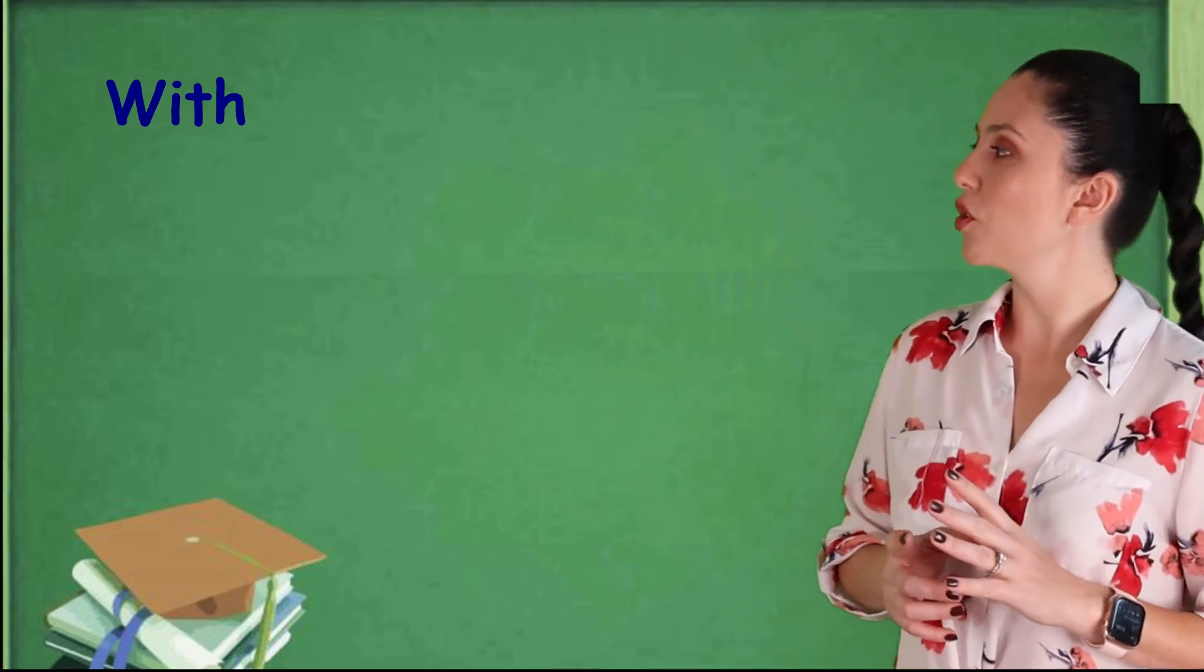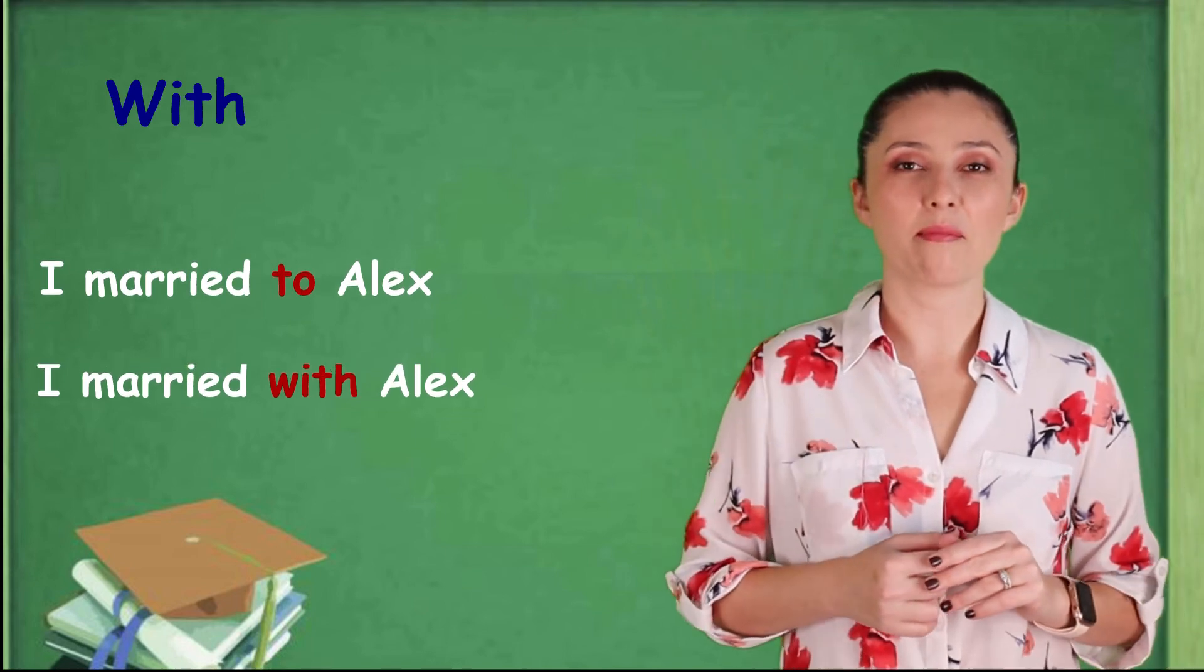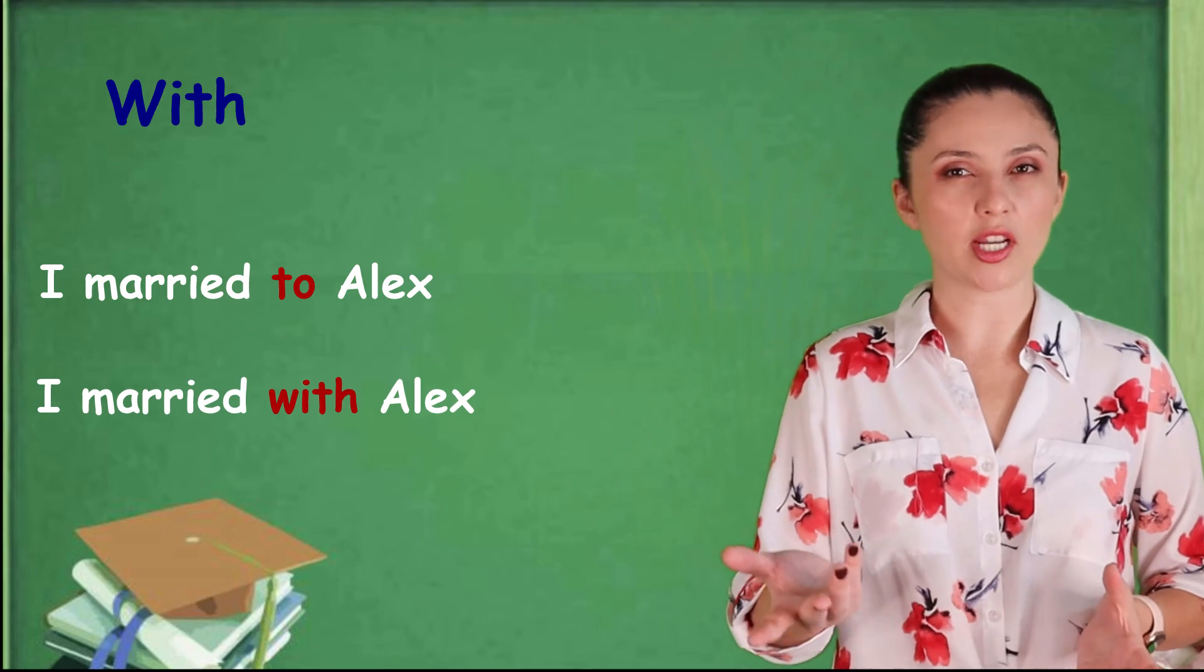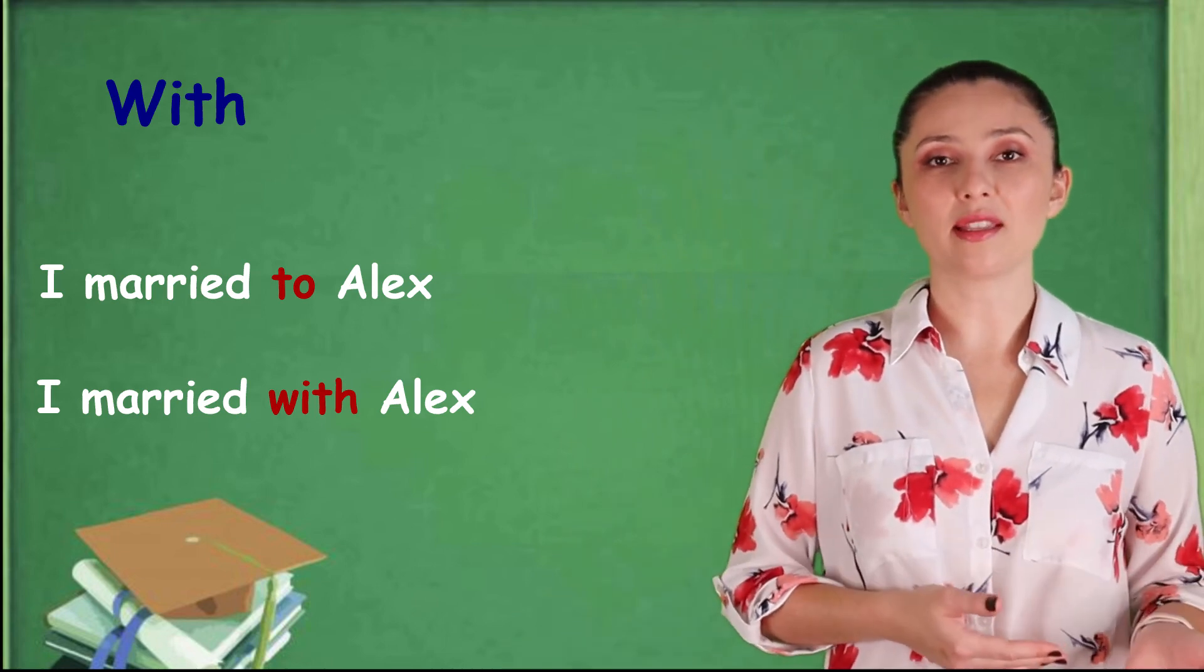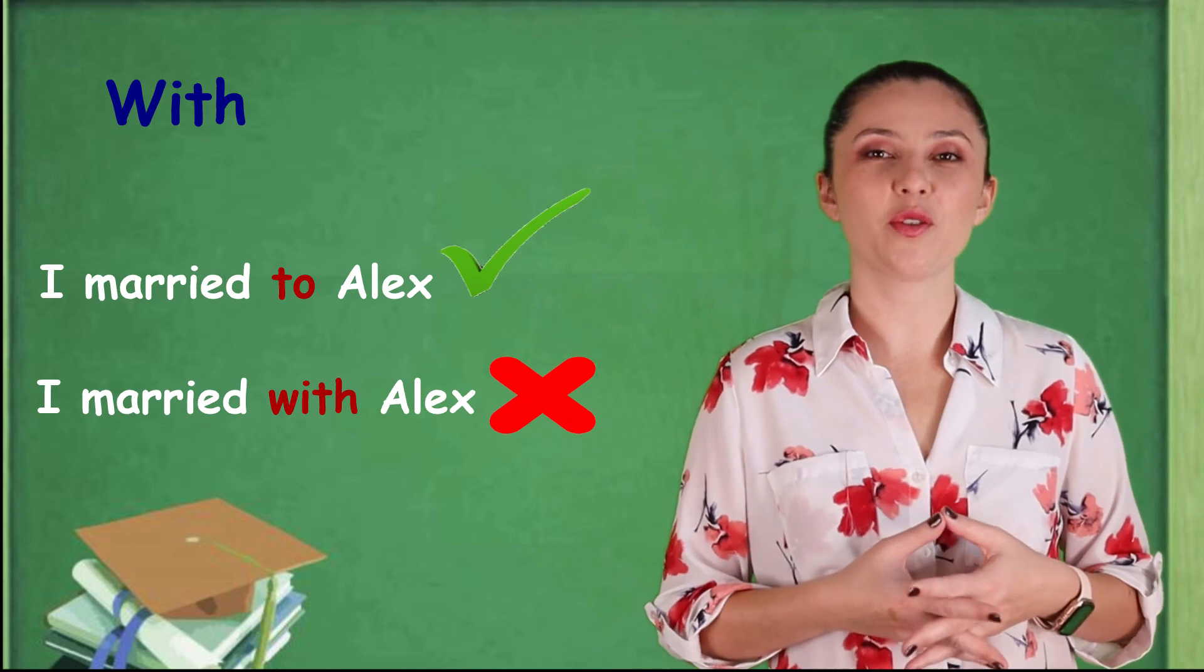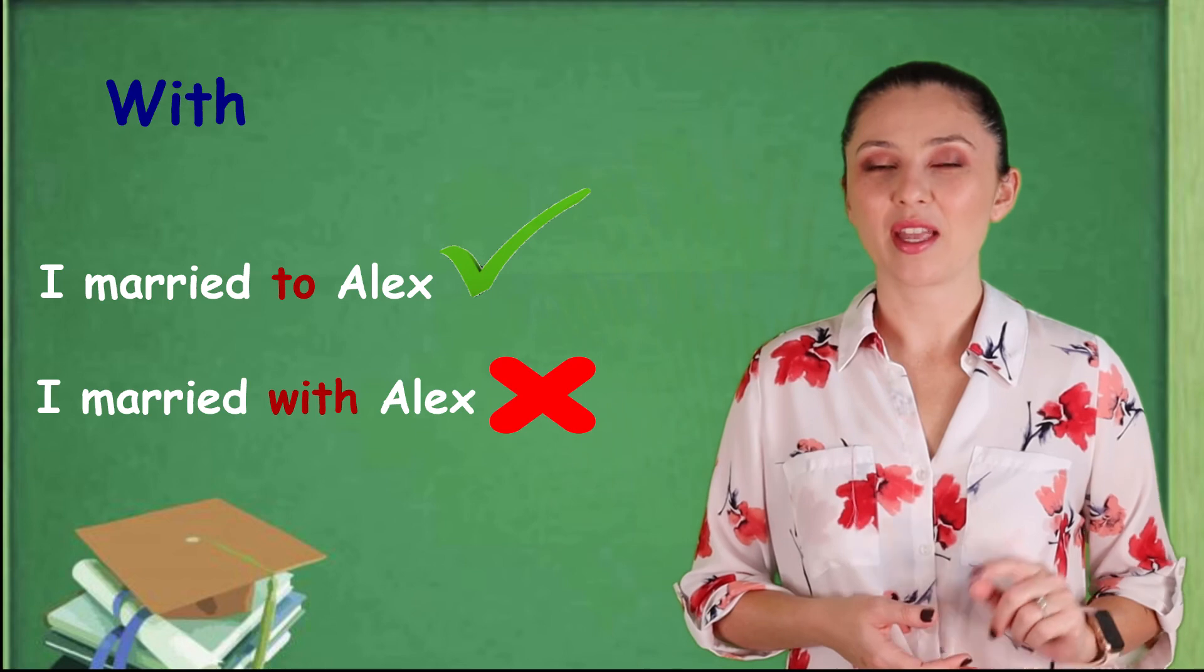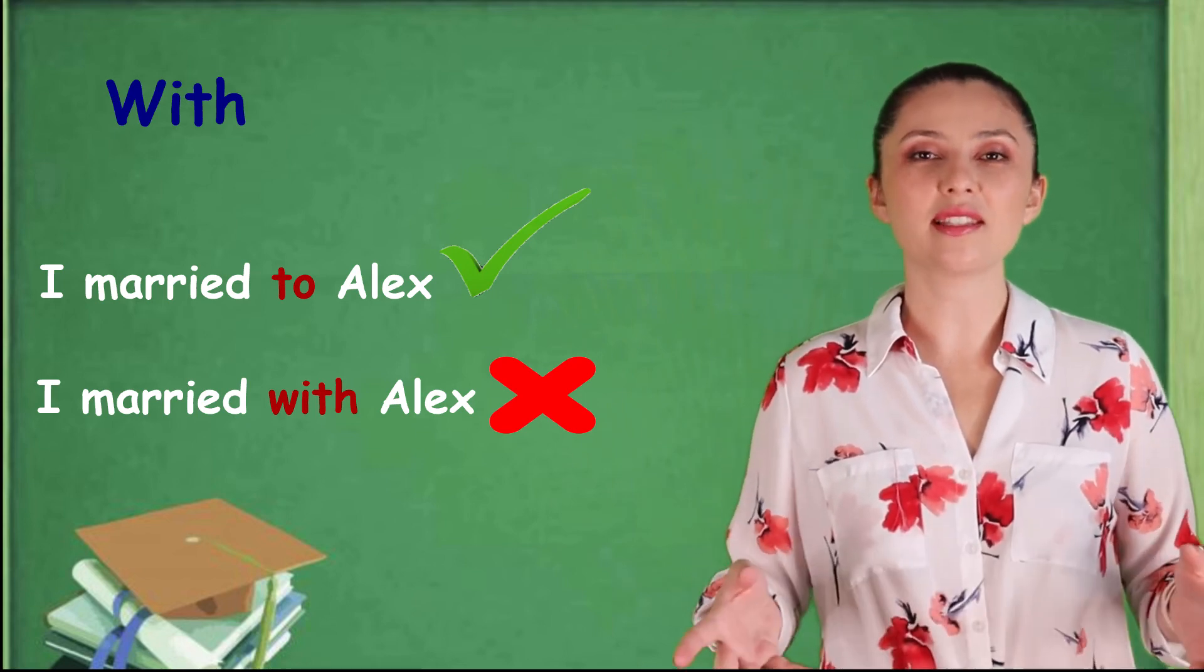And the last one, I want to ask you something. So, do you think we say, I am married to Alex? I am married with Alex. So, in your head, because you're trying to translate from Portuguese to English, you're thinking with. So, you are married with Alex. Amanda is married with John. No. This is not right. It's wrong. Because here, we use the preposition to. I am married to Alex. Amanda is married to John. So, here, we don't use with. And that's a very common mistake.